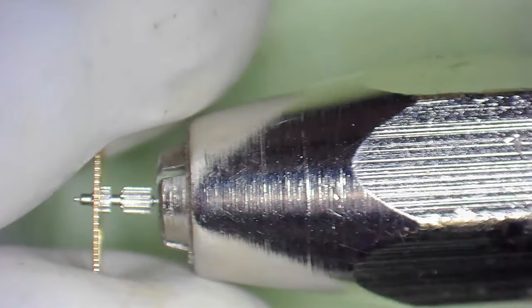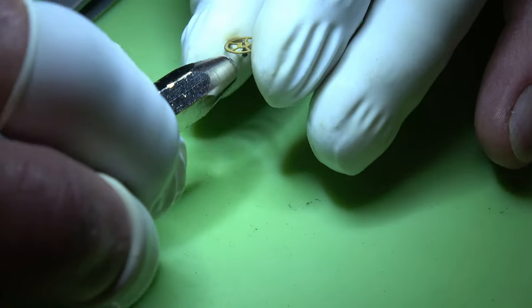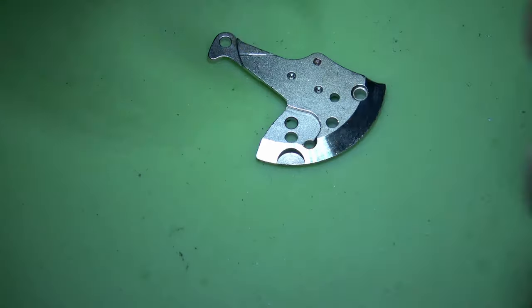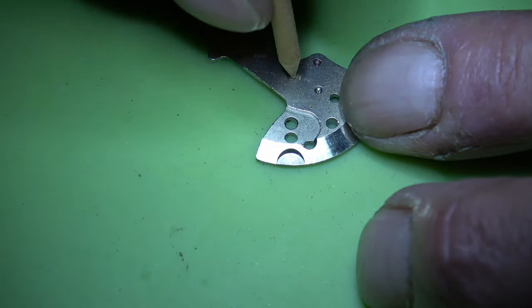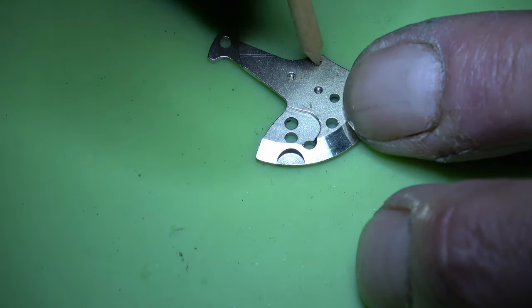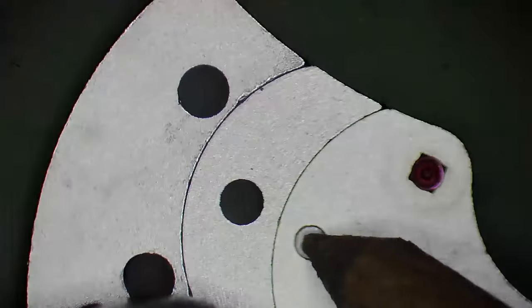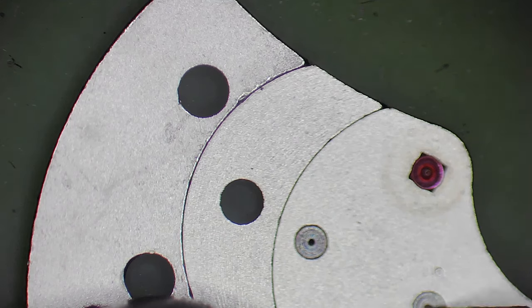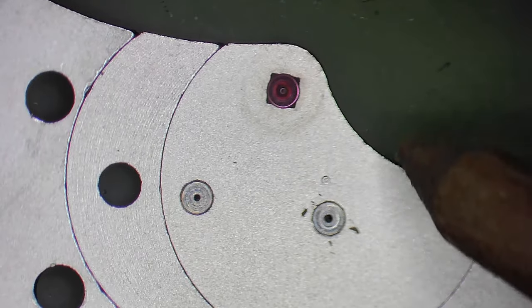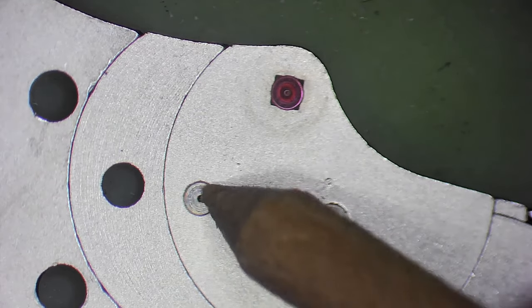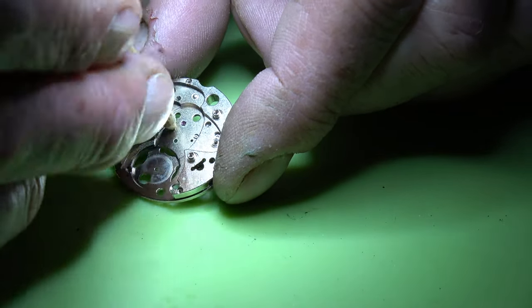With the movement disassembled, we can start doing a pre-clean. We'll give all of the pivots a clean with a peg stick. We do that with all of the pivots, and then what we can do is pick out the holes and the occasional jewel hole. I'm going to be careful here because that's fitted to a square hole—a round jewel in a square hole—very novel.